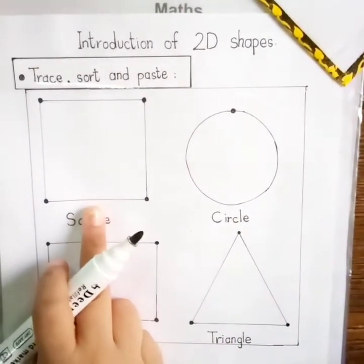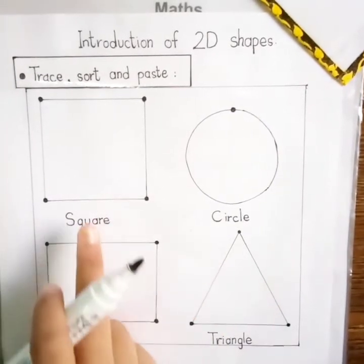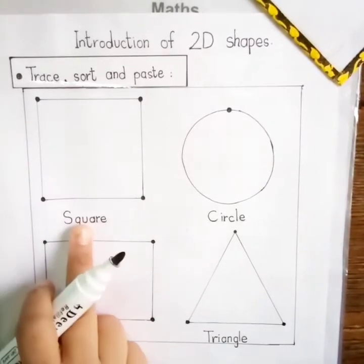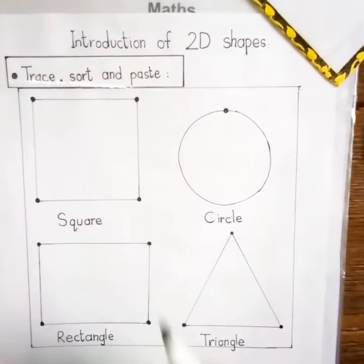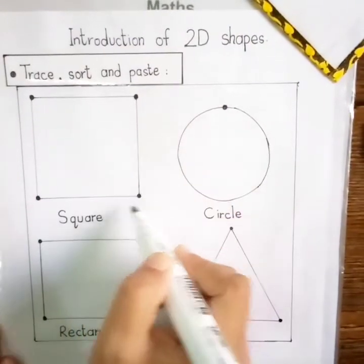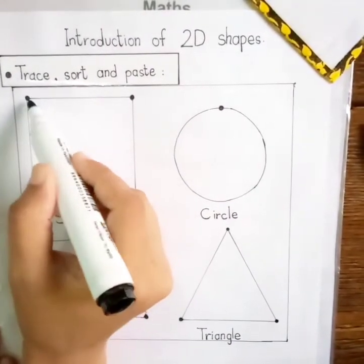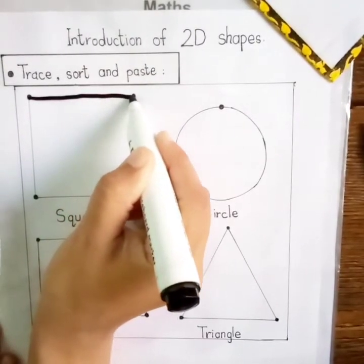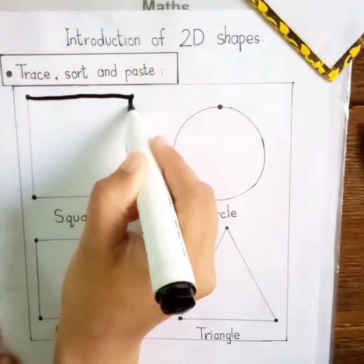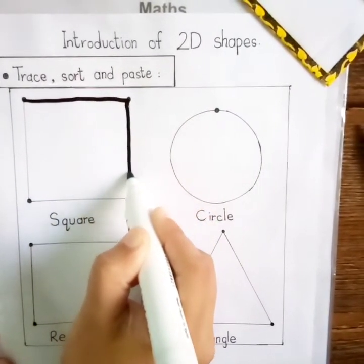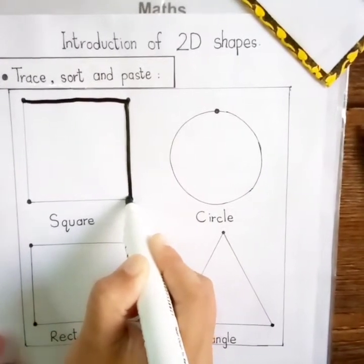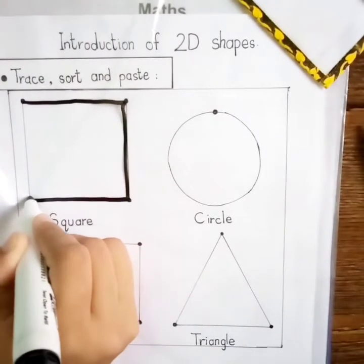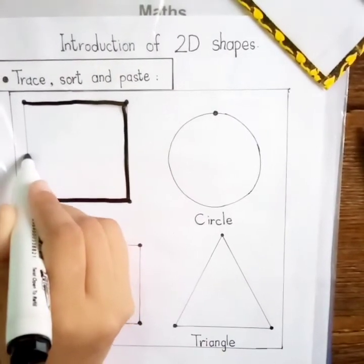Which shape is this? Square. What's written here? Square. Now I will join these 4 dots to make a square. Start from the first dot, join till the another dot, then go down, join the big dot, join the last dot.